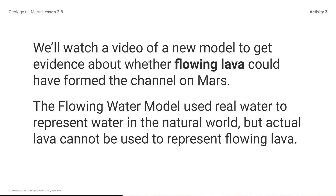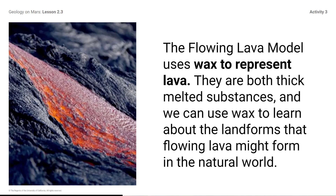The Flowing Water Model used real water to represent water in the natural world, but actual lava cannot be used to represent flowing lava. The Flowing Lava Model uses wax to represent lava. They are both thick, melted substances, and we can use wax to learn about the landforms that flowing lava might form in the natural world. If the process shown in the Flowing Lava Model forms landforms similar to the channel on Mars, this would provide evidence that the channel on Mars could have been formed by flowing lava.